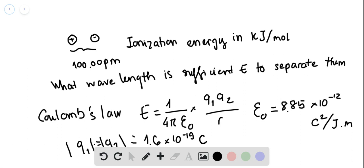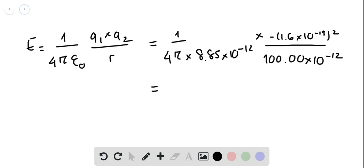In this case, epsilon zero equals 8.85 × 10⁻¹² C²/J·m. The charges q₁ and q₂ will have the same absolute value because they are a proton and electron, and the value will be 1.6 × 10⁻¹⁹ coulombs.